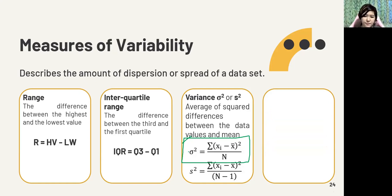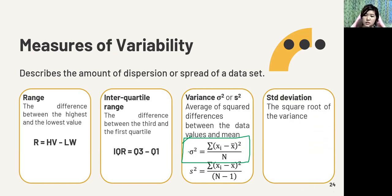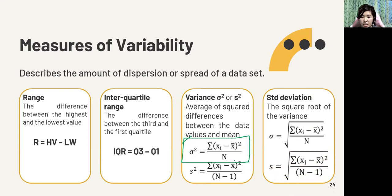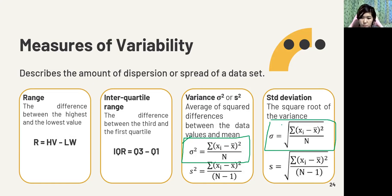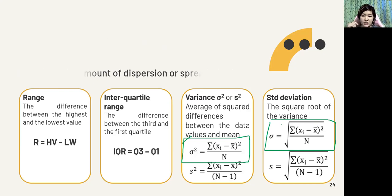The standard deviation is the square root of the variance. Again there's a difference in formula for population versus sample, but if not stated, we will use the formula for the population.